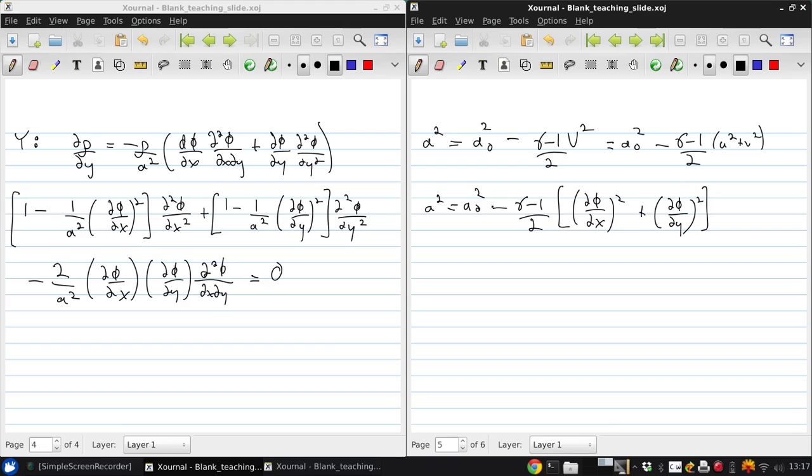Now, a0, the stagnation speed of sound, and gamma are known constants of the flow. So putting this into the velocity potential gives a single partial differential equation where the only unknown is the potential itself, phi. So in principle, this equation can then be solved subject to some boundary conditions.